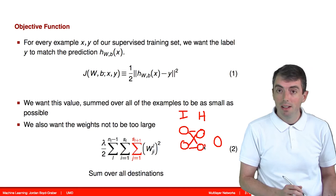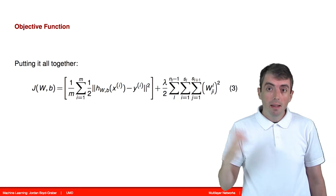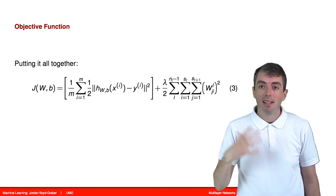These parameters typically aren't shared. So putting it all together, we have an objective function that looks like this. It's a little intimidating, but it's relatively simple in concept.